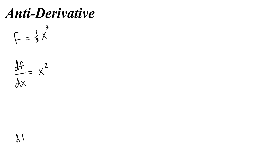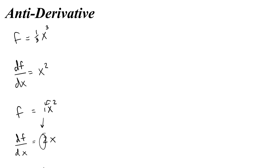What if I knew the derivative with respect to x of some function was 2x? What would the original function be? I know that my x would have to be squared, and in order to get a 2 in front, I would need to just leave a 1 out there, because 2 times 1 gives me that 2. So I could say 1x squared, or just x squared.